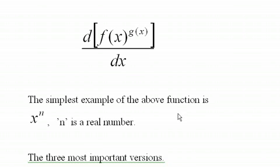You might remember when you first started taking derivatives, taking the derivative of x to the n. Well, this is a case of f of x to the g of x, but in this case f of x is x and n is a real number, so it's a constant function. G of x is a constant function. Very easy, right? It's just n times x to the n minus 1 power when you take the derivative.